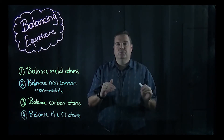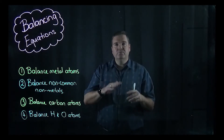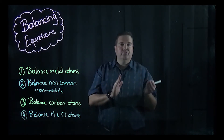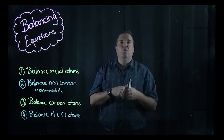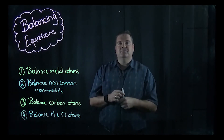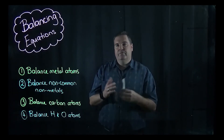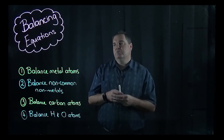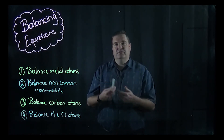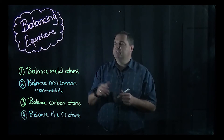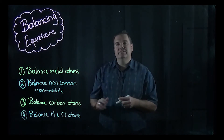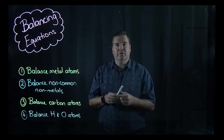Some people like to use tables with left-hand side and right-hand side, working out how many atoms of each there are — that works as well. Once you've got into the habit, you can start to follow these four steps and do it a bit quicker.